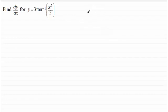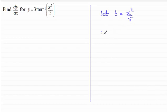So to do this, what I would do is the chain rule. I would let, let's say, t equal x squared over 5. So that means that we would have y just equaling 3 times the inverse tan or arctan of t.